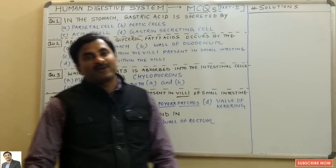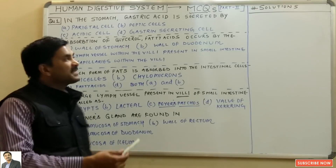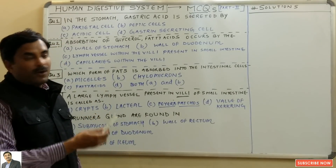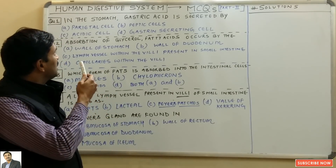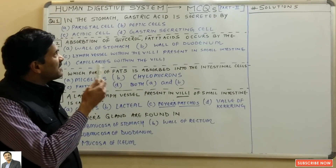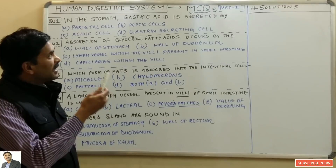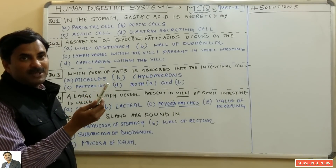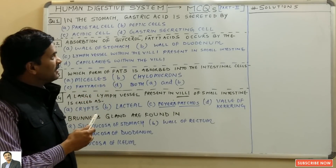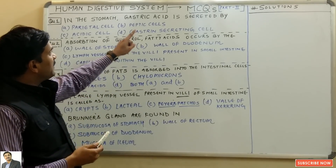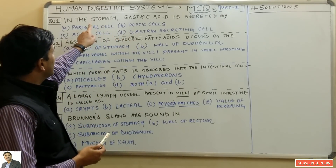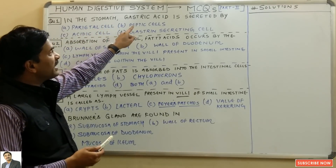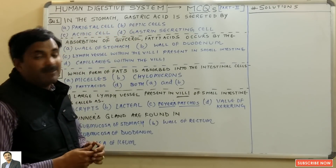Hello students, we are going to discuss Part 2 of the Human Digestive System MCQs — multiple choice questions. The very first question is: in the stomach, gastric acid is secreted by?